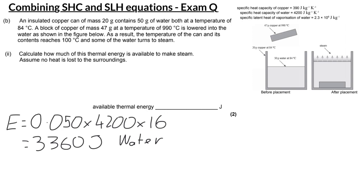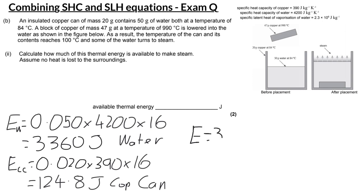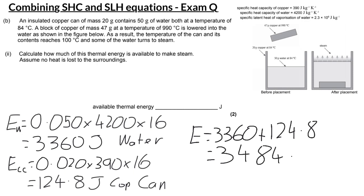Now let's work out how much energy goes into heating up the copper can. The mass of the copper can is 20 grams or 0.020 kg, times the specific heat capacity of copper which is 390, times 16 again because the can also goes from 84 degrees Celsius up to 100. That gives 124.8 joules for the copper can. So the total energy given to the copper can and the water is 3,360 + 124.8 = 3,484.8 joules.